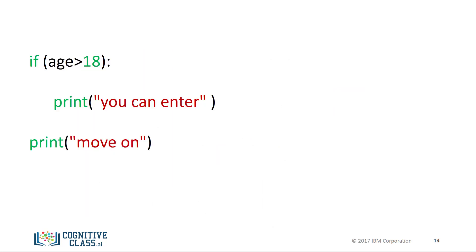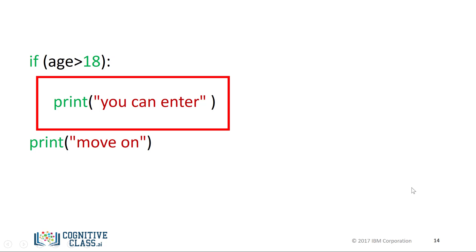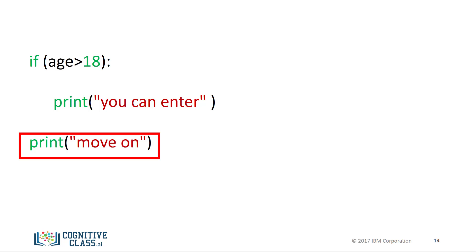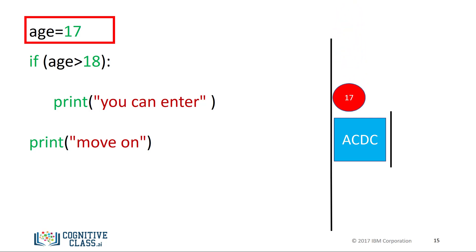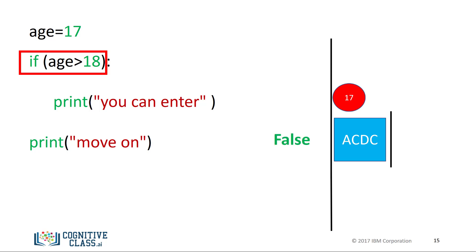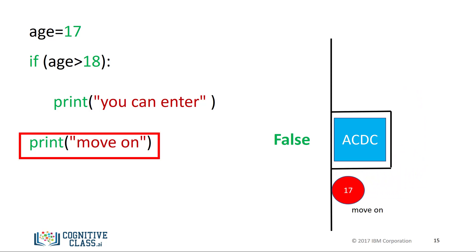This is the syntax of the if statement from our previous example. We have the if statement, followed by the expression that can be true or false — the brackets are not necessary — then a colon. Within an indent, we have the expression that is run if the condition is true. The statements after the if statement will run regardless of whether the condition is true or false. For the case where the age is 17, we set the variable age to 17, check the if statement, and since the statement is false, the program will not execute the print statement. It will just print 'move on'.